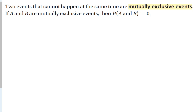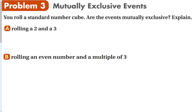Two events that cannot happen at the same time are called mutually exclusive. If A and B are mutually exclusive, then the probability of A and B both happening is equal to 0. Let's decide: are these two events mutually exclusive? You're rolling a die — can you roll a 2 and a 3? No, you can't. They are mutually exclusive, because the probability of rolling a 2 and 3 at the same time on a standard die is equal to 0.